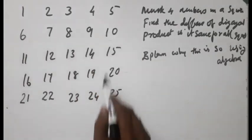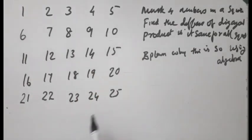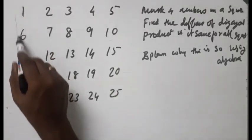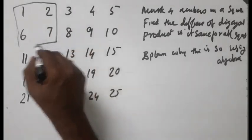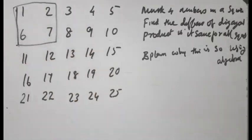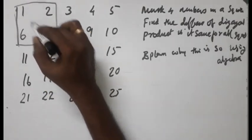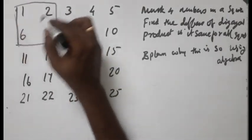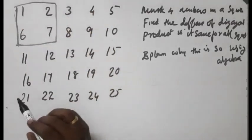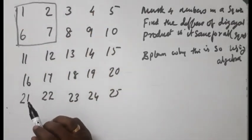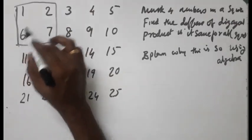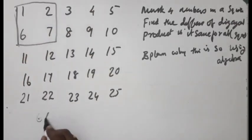You need to ask about the first question. What is the second question? You should have a square formula. You should have the diagonal products and their difference.